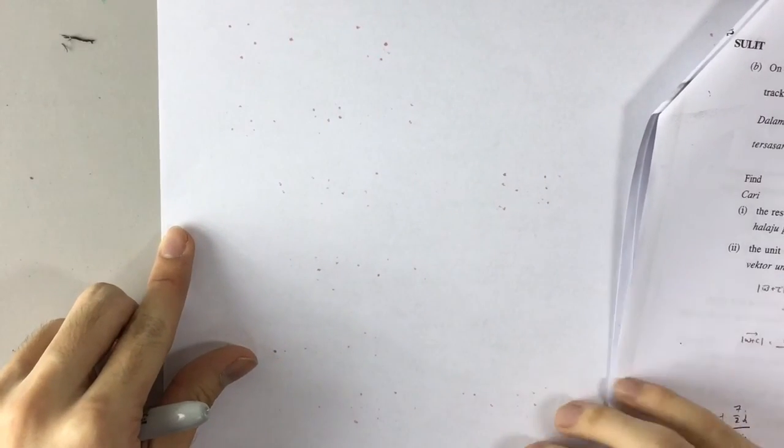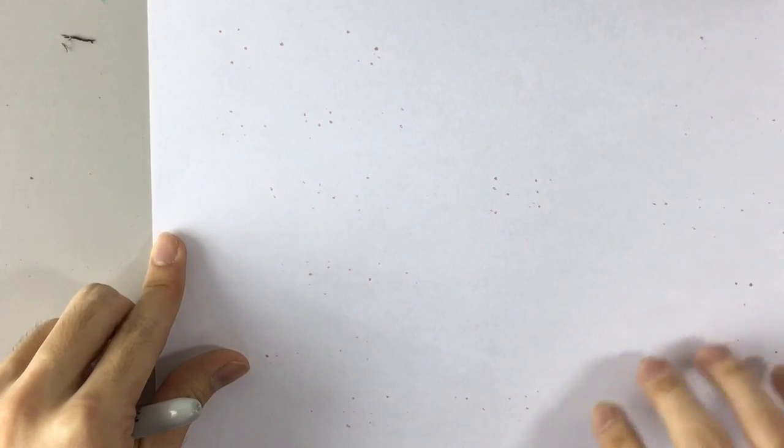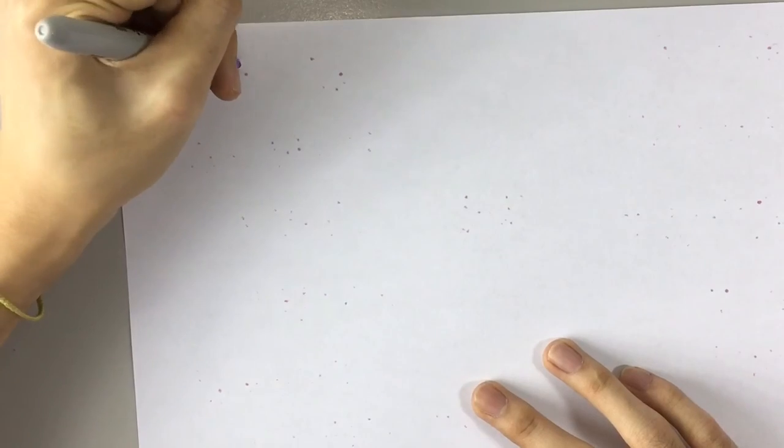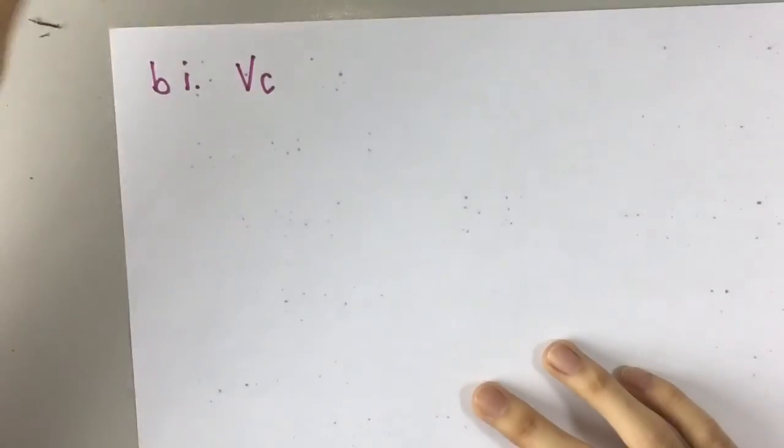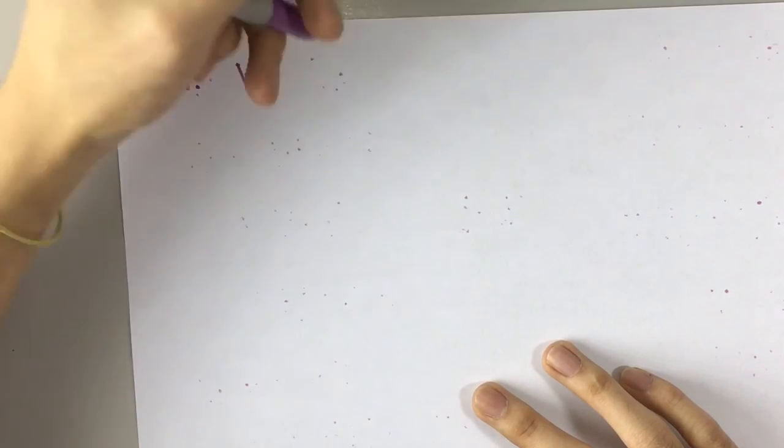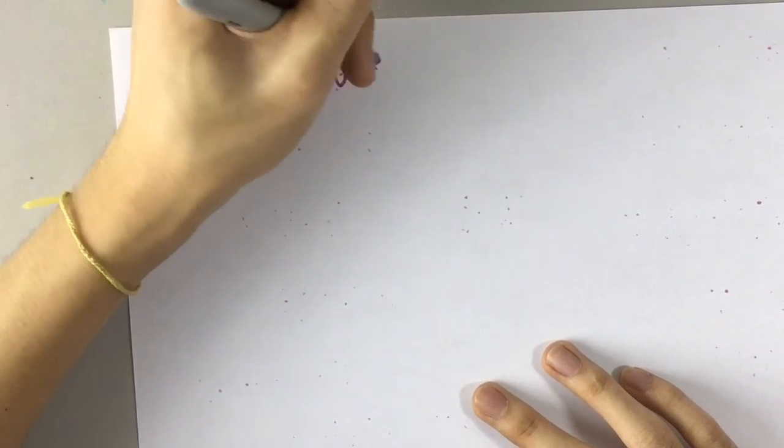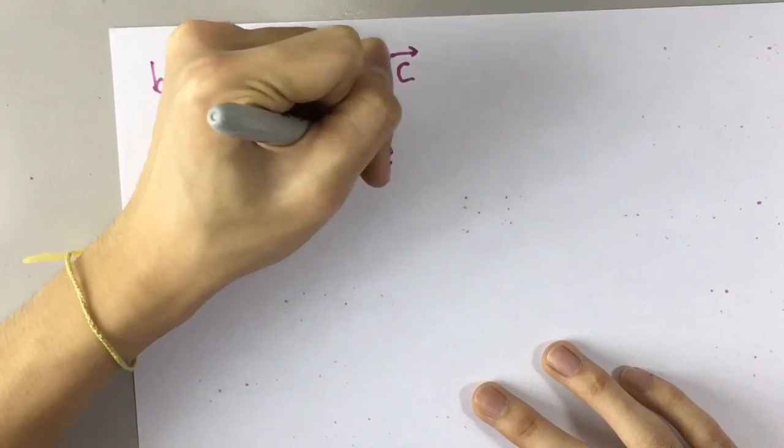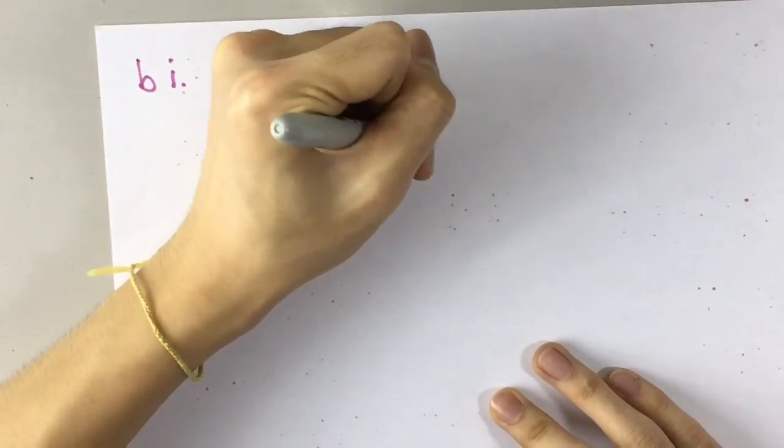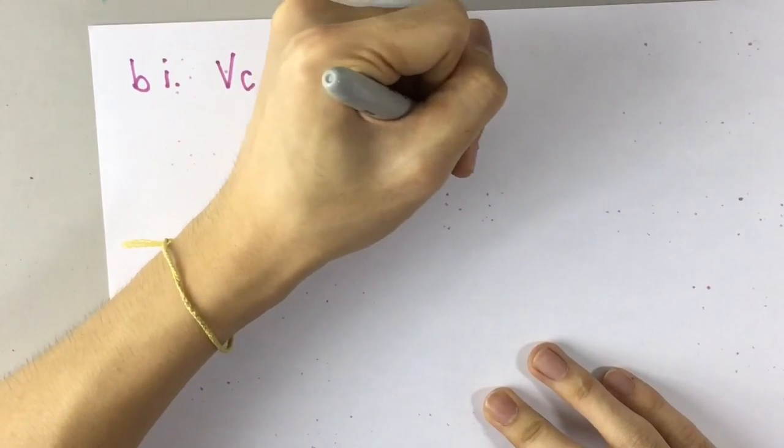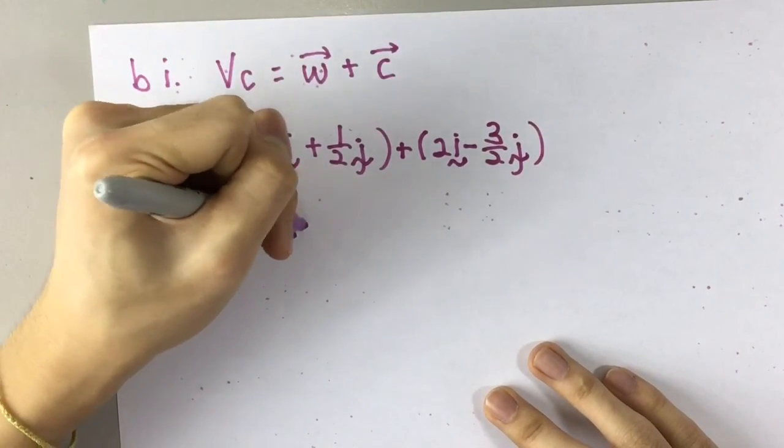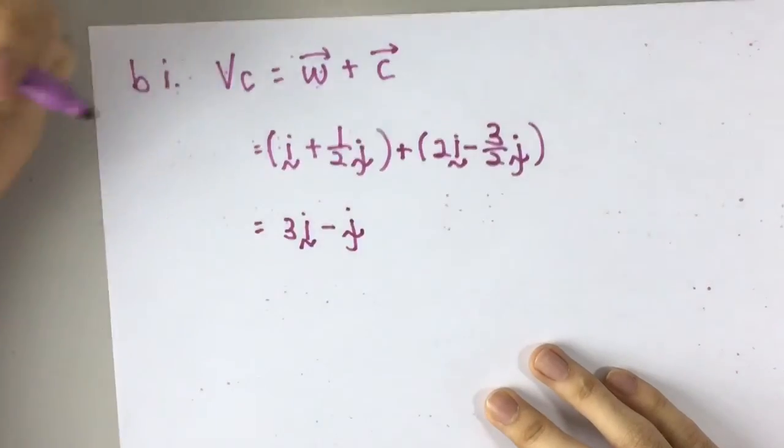Alright, part B now. B part 1 wants you to find the resultant velocity of boat C. Now, in this case, they are acting in different directions, so you just have to add them together. So, also W plus velocity of C. So, I plus half J plus 2I minus 3 over 2 J. That would give you 3I minus J. So, that's B part 1.